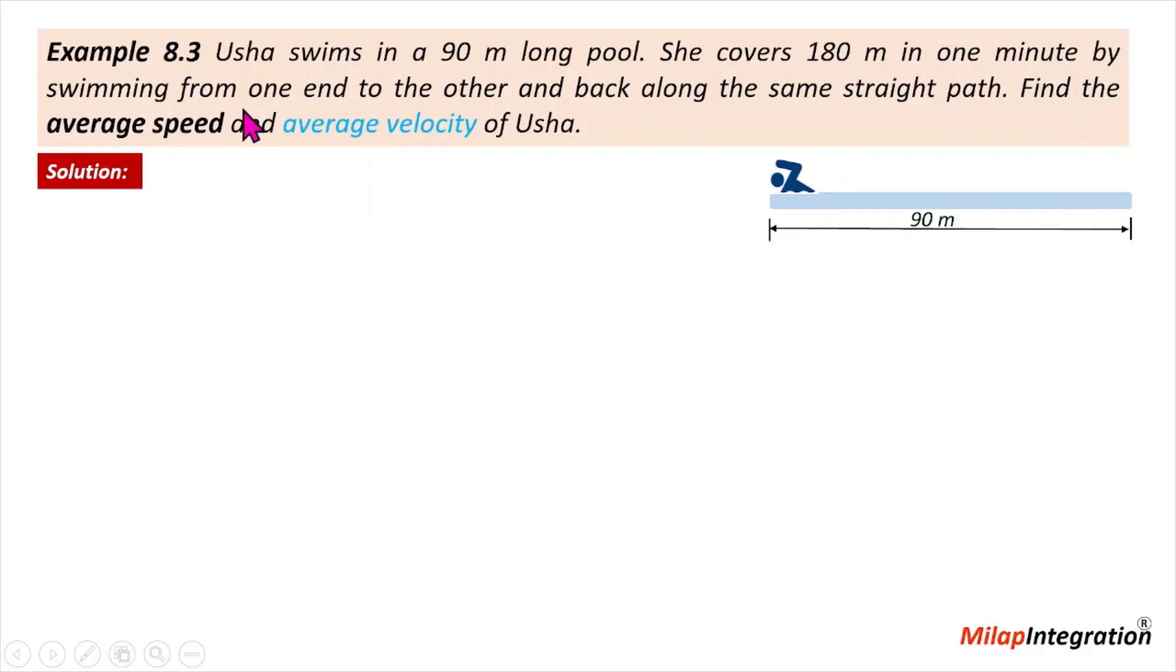Now we have a question: find the average speed and average velocity. When you tell the speed, what is the distance? And velocity, what is the displacement?